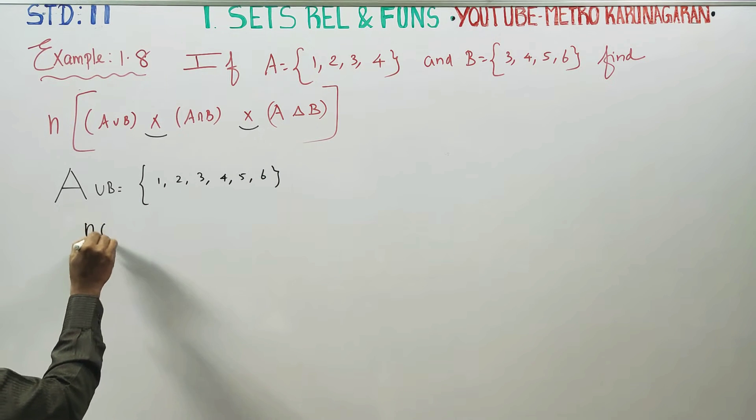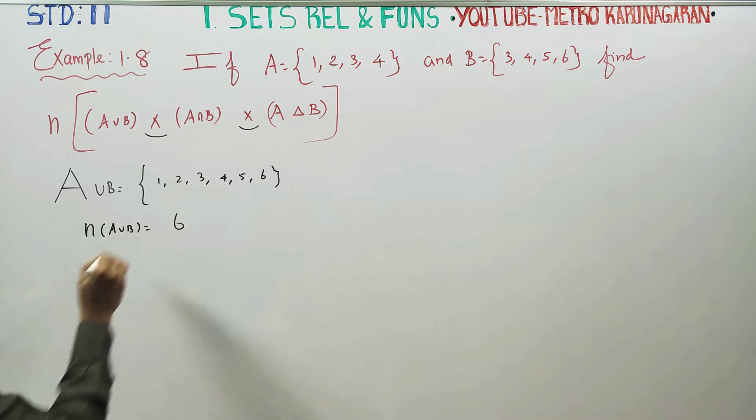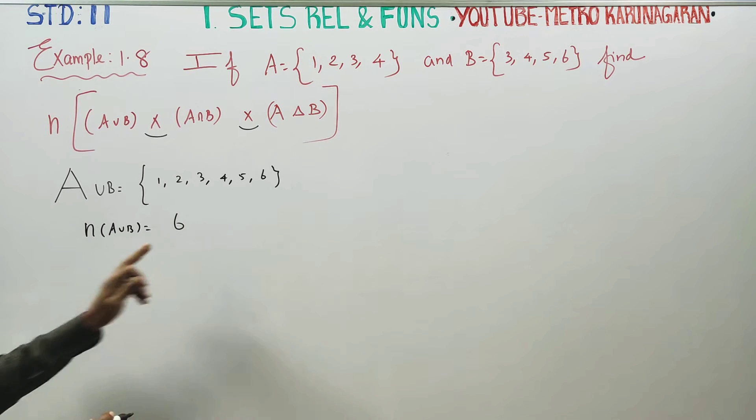Now, all the elements of A union B are here. This is the number of elements.